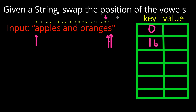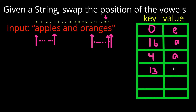E is at index 16, so at 16 we put A, and at 0 we put E. We then move the left pointer inwards until it stops at the next vowel E at index 4, and we move the right pointer inwards until it gets to vowel A at index 13. We record those in our hash map: at 13 we put A, at 4 we put E. Continuing, the left pointer reaches A at index 7 and the right pointer reaches O at index 11, so at 7 we put O and at 11 we put A.